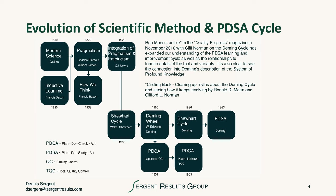The evolution of the scientific method in the PDSA cycle really begins back in the days of Galileo and this field of pragmatism that inspired C.I. Lewis to write his book on integration and empiricism of pragmatism. This is the foundation for the work that Walter Shewhart did in Bell Laboratories in the 1920s. After Deming shared the Shewhart cycle with the Japanese in the early 1950s, the Japanese used PDCA as their way of describing it. They called it the Deming Wheel and labeled it Plan, Do, Check, Act, using it in quality control and lean production.